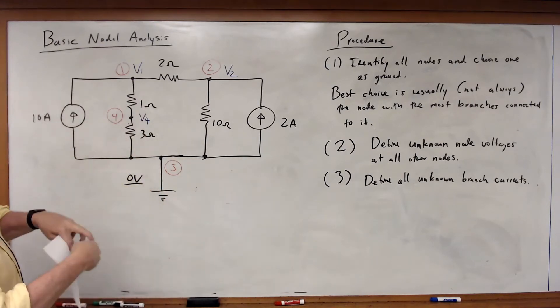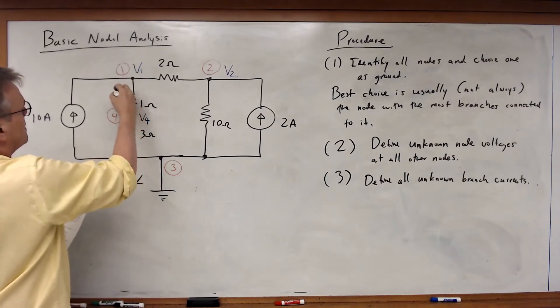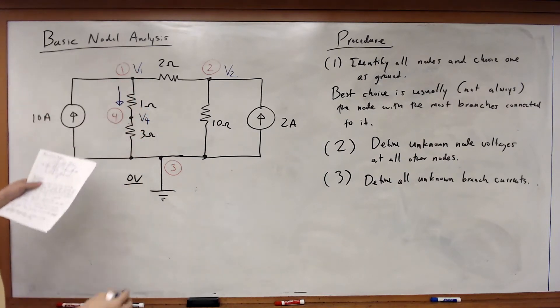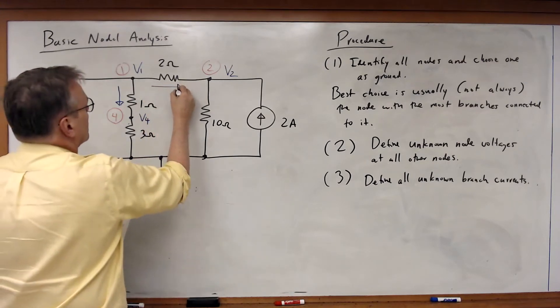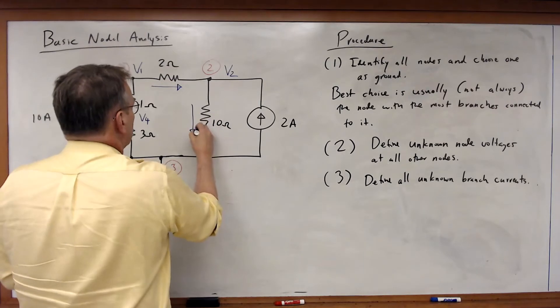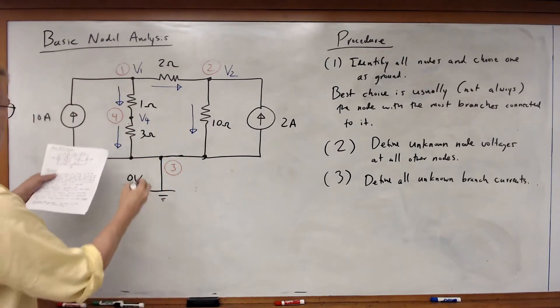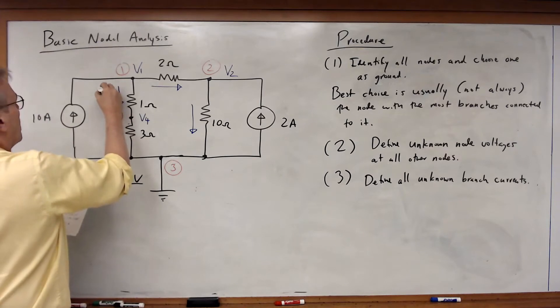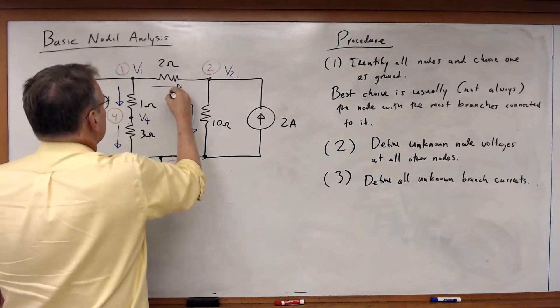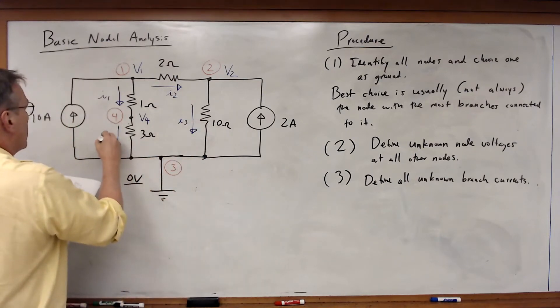And what I'm going to do is I'm going to say, for this, I'm going to pick a current going this direction, this direction for this resistor, this direction, this direction, and this direction. And I'm going to call these currents I1, I2, I3, and I4.